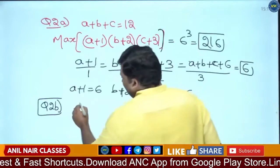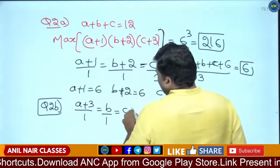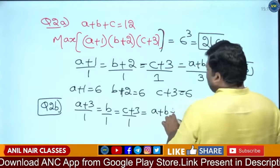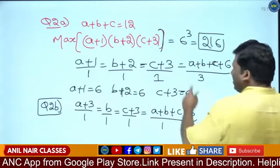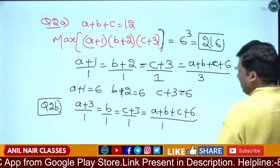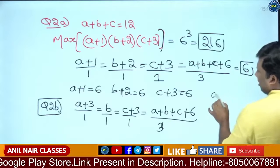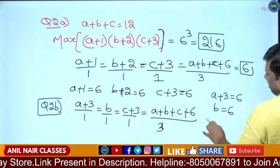This will become A plus 3 by 1, equivalent to B by 1, equivalent to C plus 3 by 1. So it is A plus B plus C plus 6, by 3. A plus B plus C is given as 12, 12 plus 6 is 18. So 18 by 3. A plus 3 will be 6, B will be 6, C plus 3 also 6. Same answer: 216.